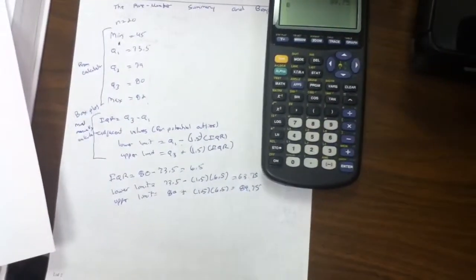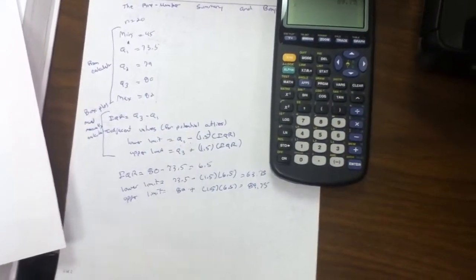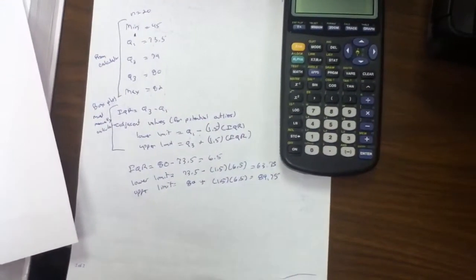These values we're going to use in the next tutorial to do our box plot. This concludes the tutorial on the five number summary.